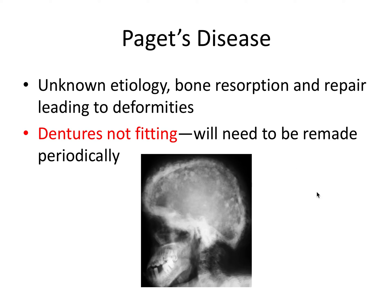Paget's disease, covered in oral pathology, has unknown etiology and involves uncontrolled cycles of bone resorption and repair leading to deformities. The classic boards question is a patient whose hat or dentures are no longer fitting, because the skull is undergoing deformities. Dentures would have to be remade periodically as the bone is remodeled. That's the classic board question: dentures no longer fitting due to bony expansion and remodeling from Paget's disease.